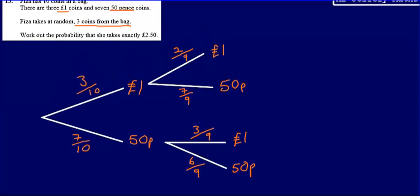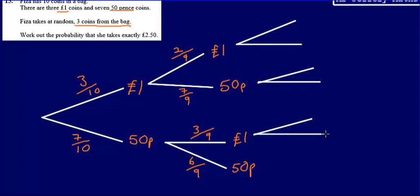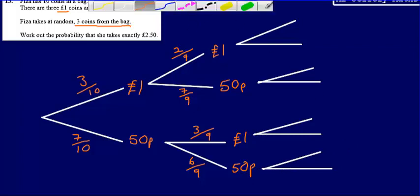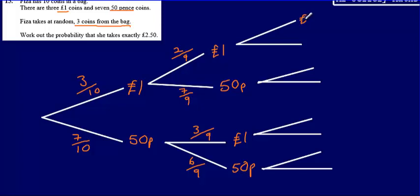I'm just going to complete the rest of this probability tree diagram — our first selection, second selection, and then our third. If she's chosen a £1 and then another £1, there's only one £1 left and eight coins left in total, so the probability of a £1 on the third pick is 1 eighth. For a 50p after two £1's, there are still seven 50p's left out of eight coins.